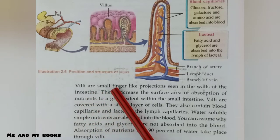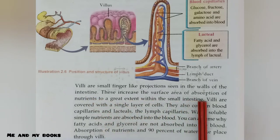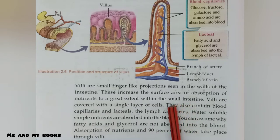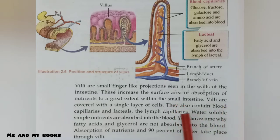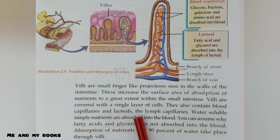Villi are small finger-like projections seen in the wall of the intestine. They increase the surface area of absorption of nutrients to a great extent within the small intestine. Their function is to increase the surface area of absorption and to help in the absorption process. Villi are covered with a single layer of cells.